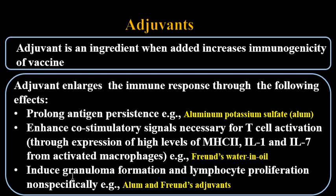An adjuvant can also induce granuloma formation at the site of infection, as happens with BCG vaccination. This induces granuloma formation and lymphocyte proliferation non-specifically. Examples for such adjuvants are alum and Freund's adjuvants.